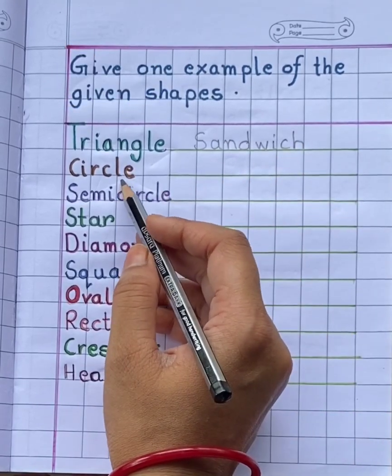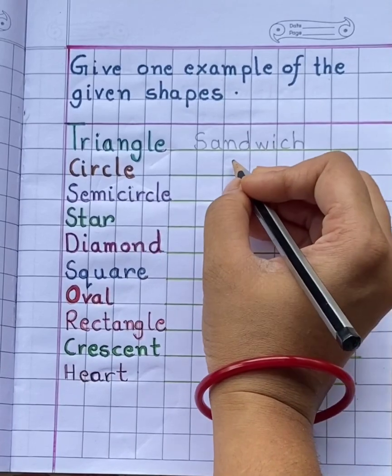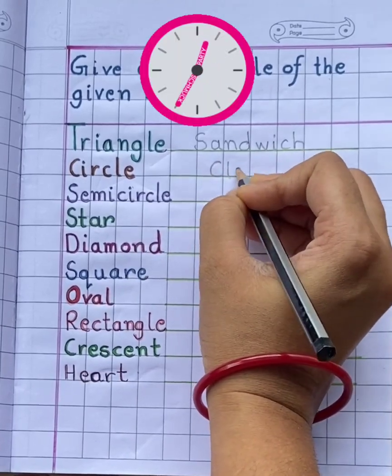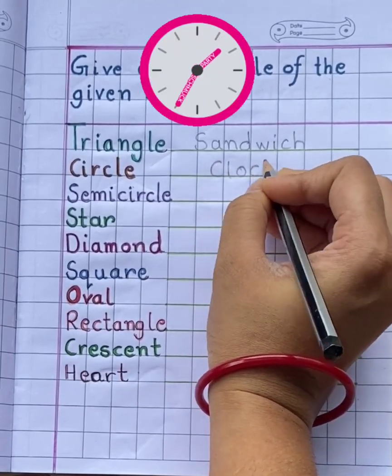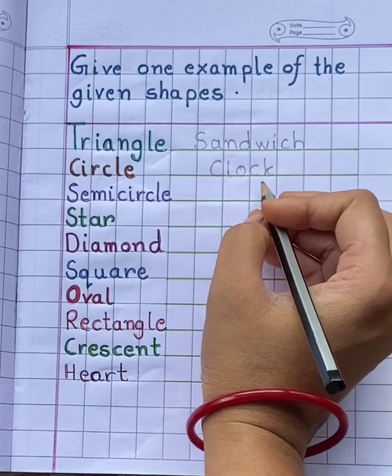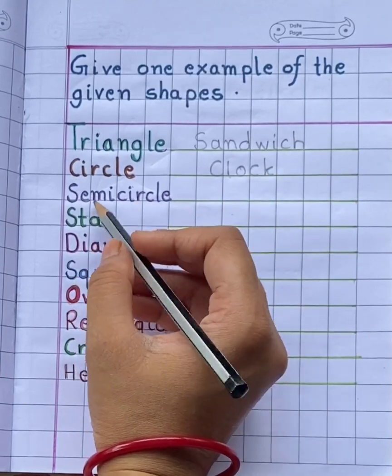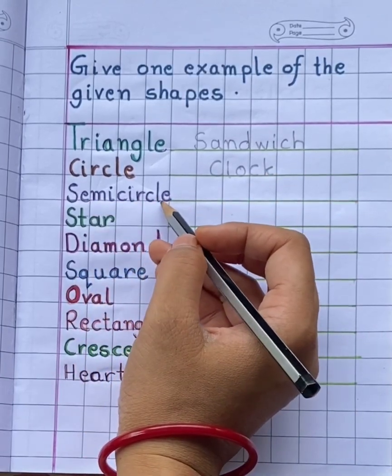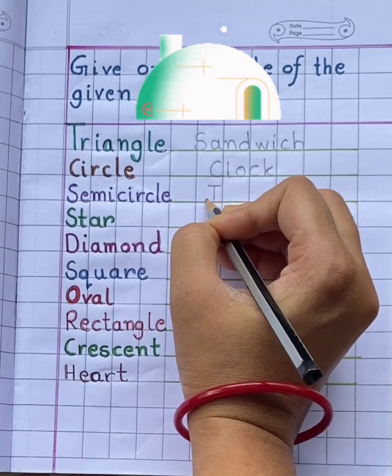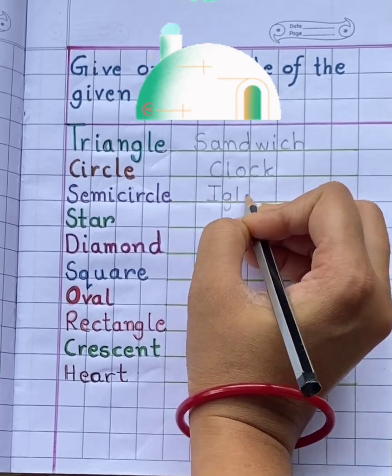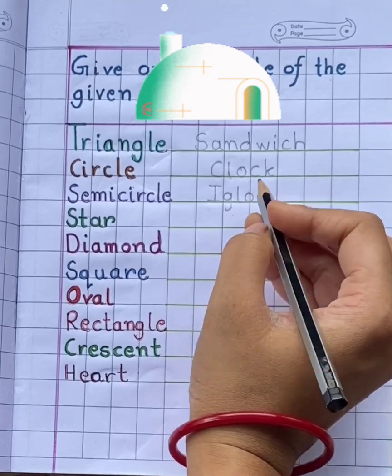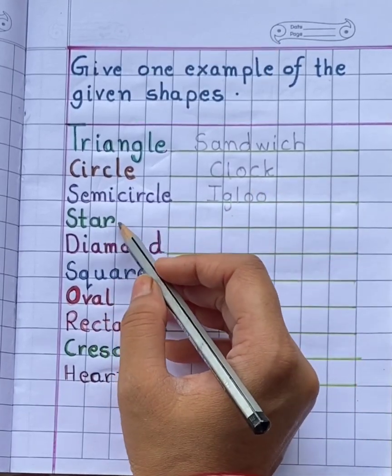Next, circle. Example of circle is clock. C-L-O-C-K. Next, semicircle. Example of semicircle is igloo. I-G-L-O-O.